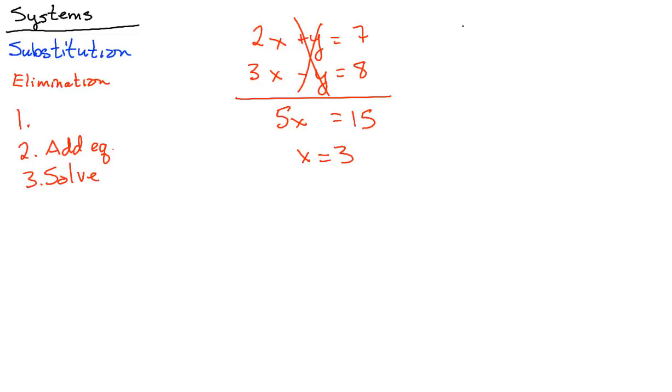But what about if I have something like 2x plus 7y equals 9 and say 6x minus y equals 5? What happens then? If I add them, it didn't eliminate any. And so that's step number one: multiply by something to get opposites.